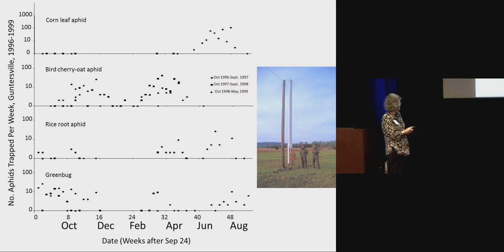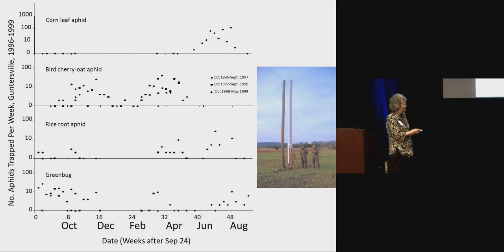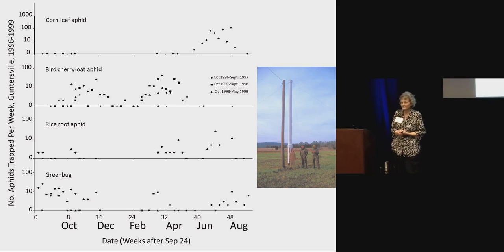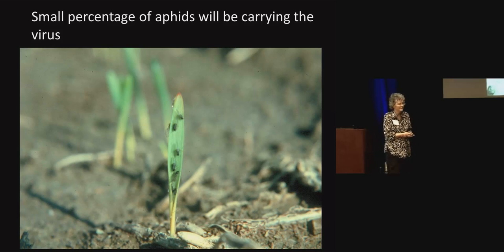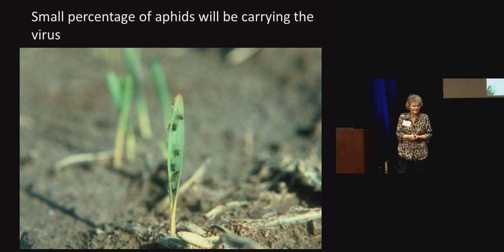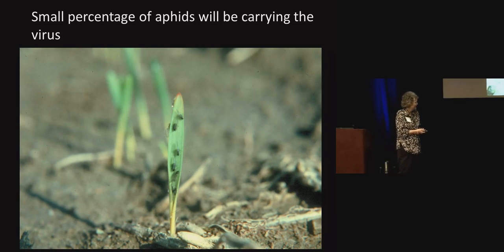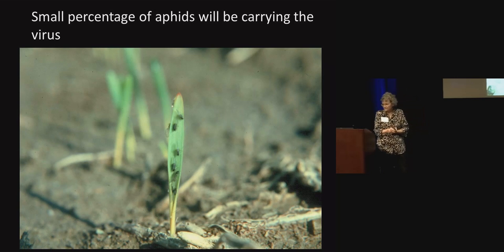These aphids tend to come in in a sequence. The green bug, which can cause some direct damage to wheat on its own but does not spread the southern strains of barley yellow dwarf and cereal yellow dwarf viruses, tends to come in earlier. Then the rice root aphid and bird cherry oat aphid come in, flying around and available to colonize wheat. Only a small percentage of these winged aphids are going to be carrying the virus — far less than one percent, and a three percent infection rate would be considered very, very high.